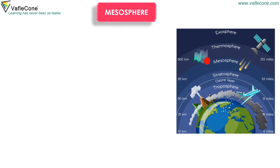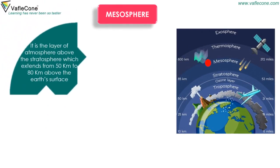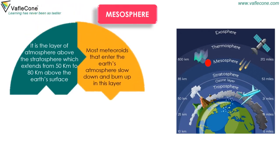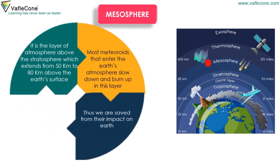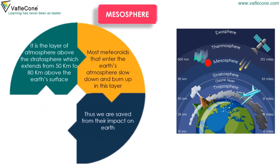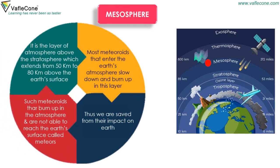Mesosphere is the layer of atmosphere above the stratosphere, which extends from 50 kilometers to 80 kilometers above the earth's surface. Most meteoroids that enter the earth's atmosphere slow down and burn up in this layer, thus saving us from their impact on earth. Such meteoroids that burn up in the atmosphere and are not able to reach the earth's surface are called meteors.